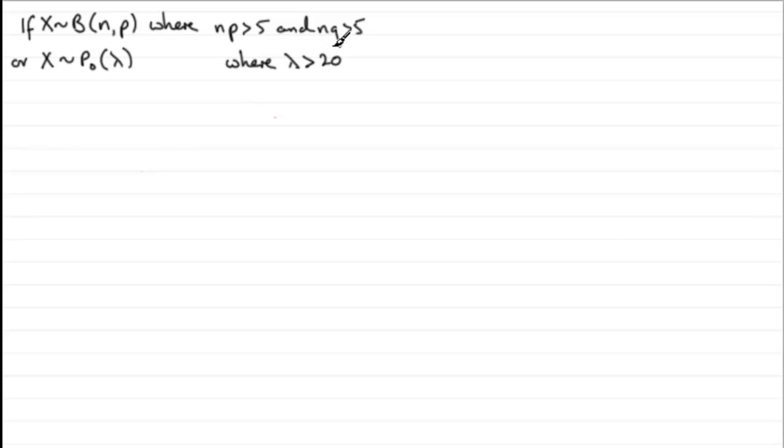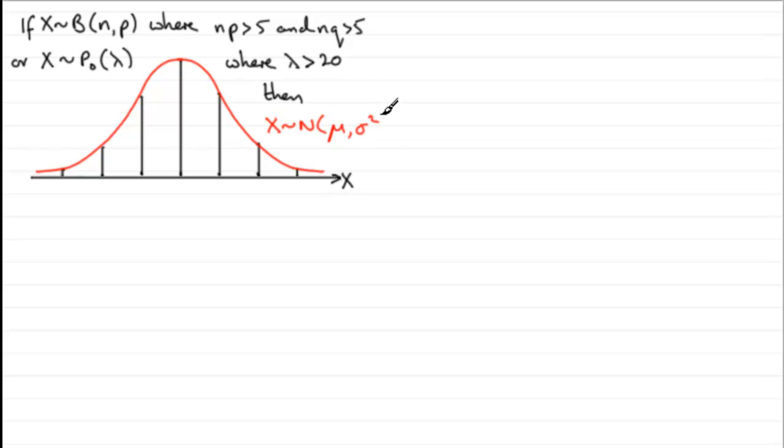Then if these conditions are true and we were to plot the probabilities associated with various values, we would find that we would get a distribution that was shaped something like this. If I was to put a curve around it, it would look something like this. And this particular curve is a normal curve. These distributions tend towards the normal curve.